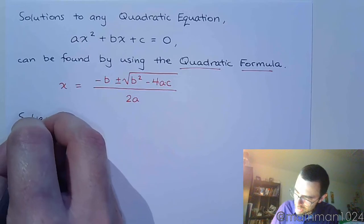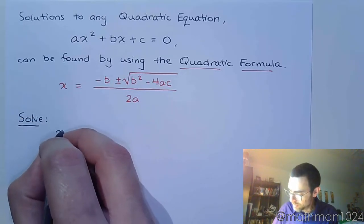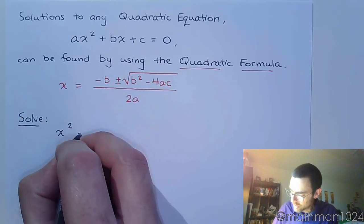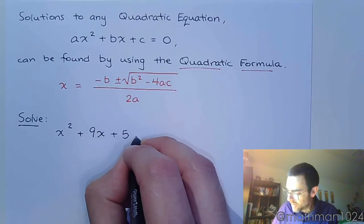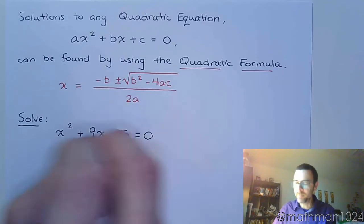So if we are trying to solve this equation, x² + 9x + 5 = 0.